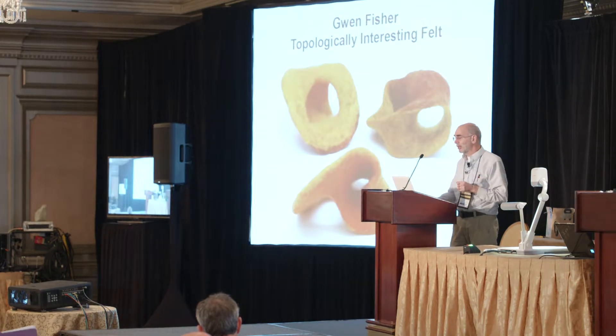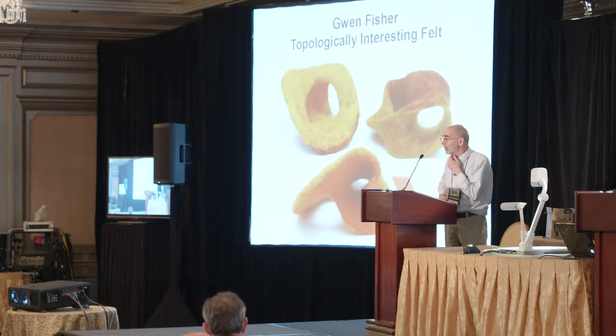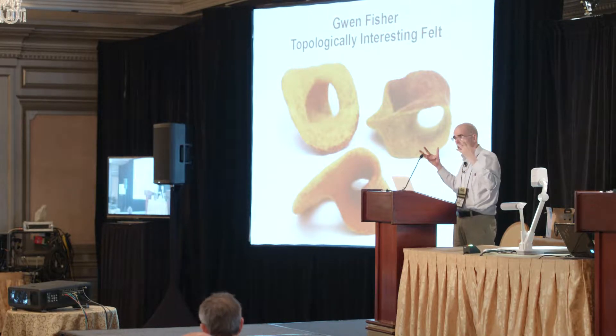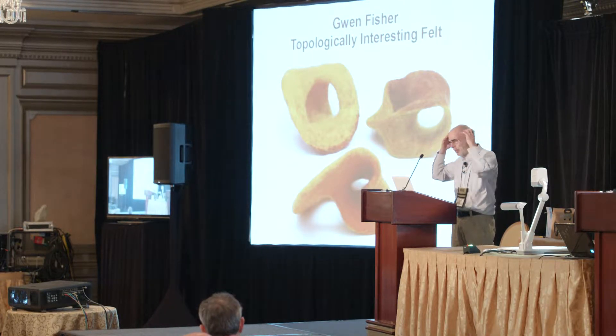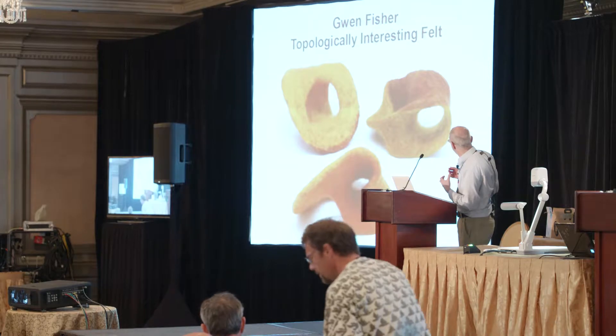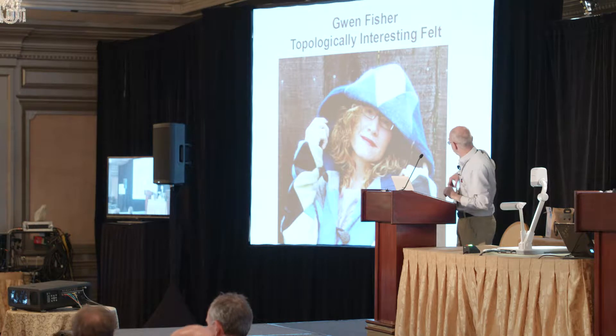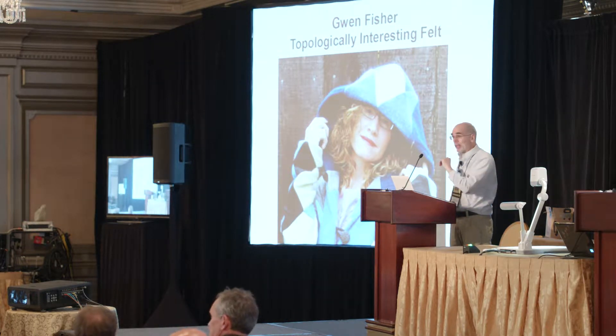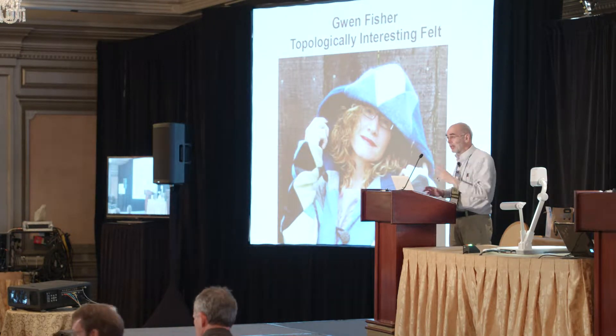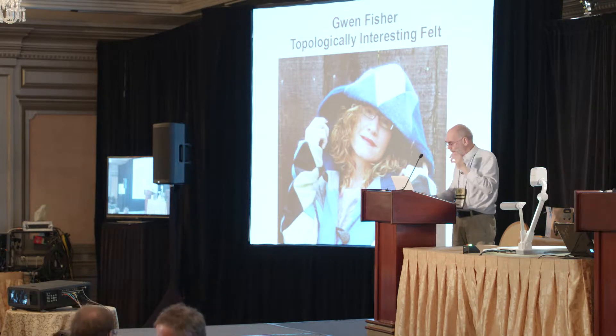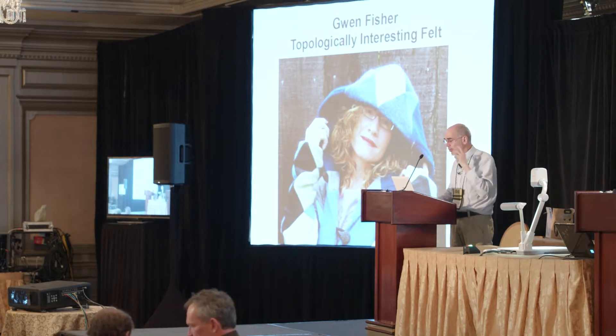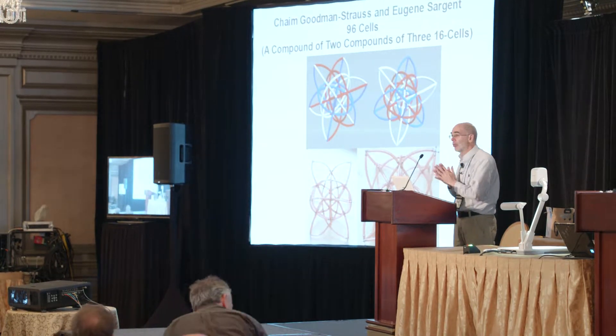The second activity is Gwen Fisher. She talked about this yesterday — taking the traditional idea of making felt, applying it to topological surfaces. Find Gwen and her table; it involves felt and water, and you can make a Möbius strip, a Klein bottle surface, or a whole bunch of different topological things.